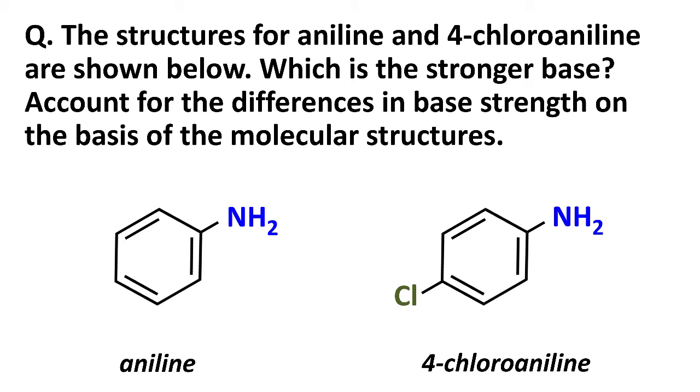Now we can apply the same reasoning or same type of reasoning to bases. So here we have two bases, aniline and four chloroaniline. And the question is, which one is stronger and why on the basis of molecular structures? Now, if we look in a little more detail at what makes them a base, both of these have an NH2 group. There's a lone pair of electrons on the nitrogen, which can attract an H plus or a proton. And how well that is attracted, how strongly it's held is a measure of how strong the base is.